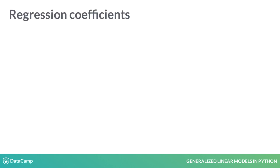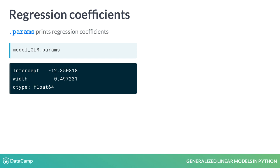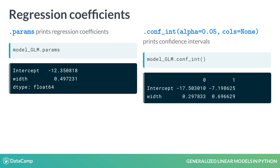To only view the regression coefficients, we can use params given the model fit. Similarly, the confidence intervals for the parameter estimates can be obtained by calling conf_int. The default is 95%, which you can change using the alpha argument. With the cols argument, you can specify which confidence intervals to return.